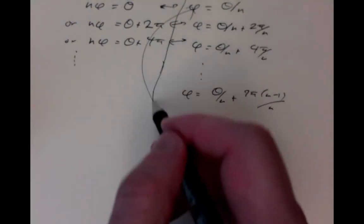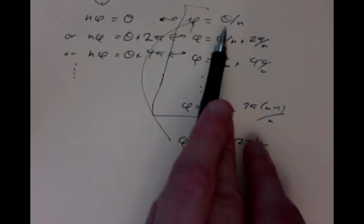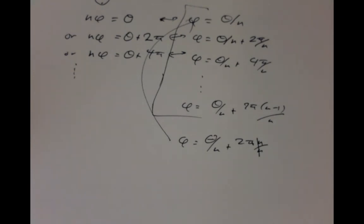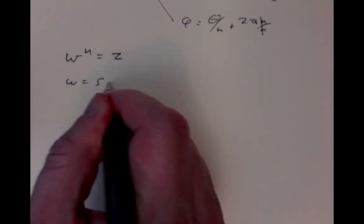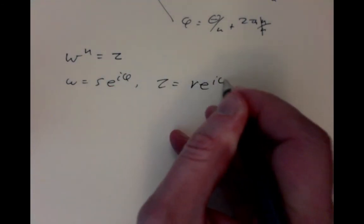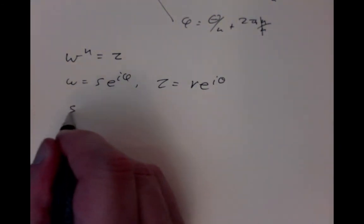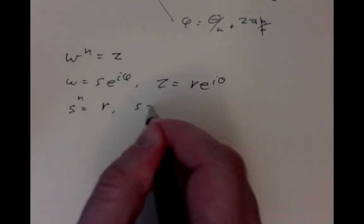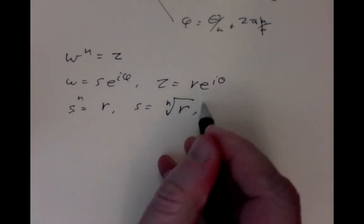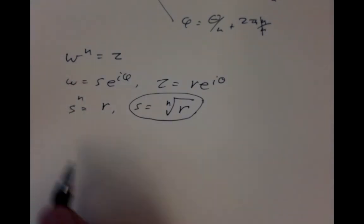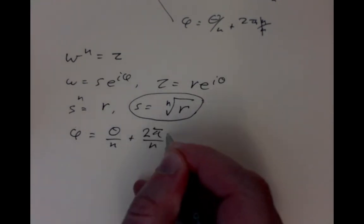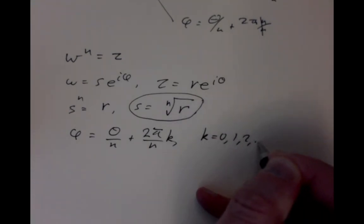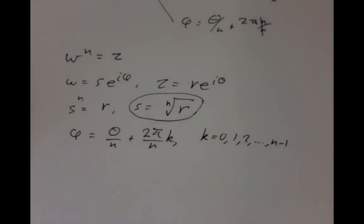Phi itself is the argument of a complex number, so it's really only defined up to 2 pi multiples anyway. It represents the same complex number if you add 2 pi to it. The possible solutions are really these. You don't need to include this one because it's the same as that one. So the possibilities, if we want to solve w to the n equals z, where w is s e to the i phi and z is some known r e to the i theta, these are our unknowns. Therefore, s to the n has to be r, so s is the nth root of r. That's the only possibility for the unknown s.